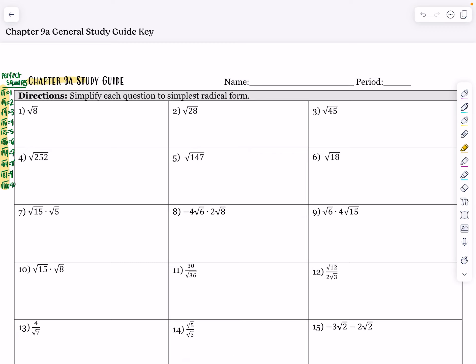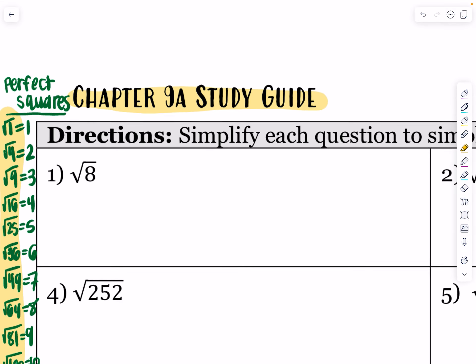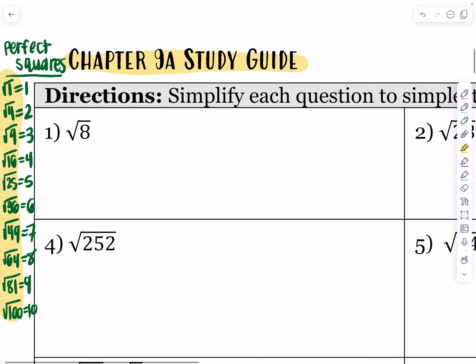Hello everyone and welcome to the chapter 9A study guide. The first thing you're going to notice is that I have written my perfect squares down the side of this sheet of paper. I would do that on your study guide — it makes it a little bit easier when looking for perfect square factors. I would create that list as soon as you get your test. It's easy to create that list with your calculator; I would go up to about 100, which should be sufficient for the study guide and for the test.